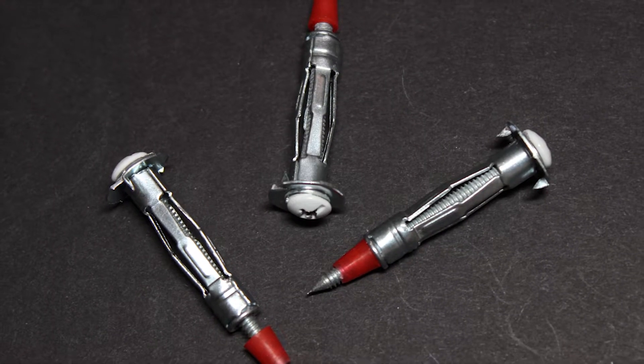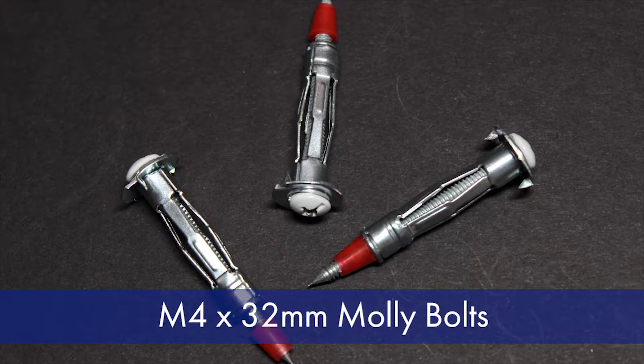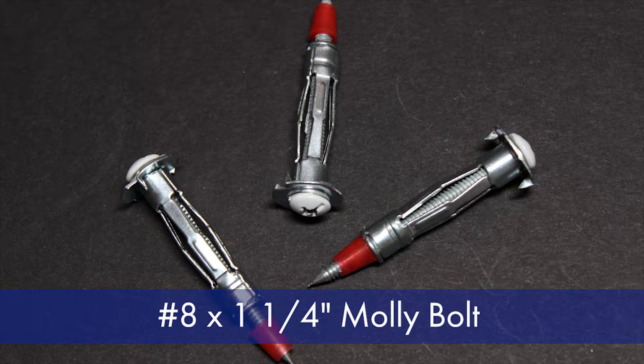If you're attaching your ceiling mount to drywall, you'll want three M4 by 32 millimeter molly bolts, or with imperial measurements, the bolt should be a number eight by one and a quarter inch molly bolt.